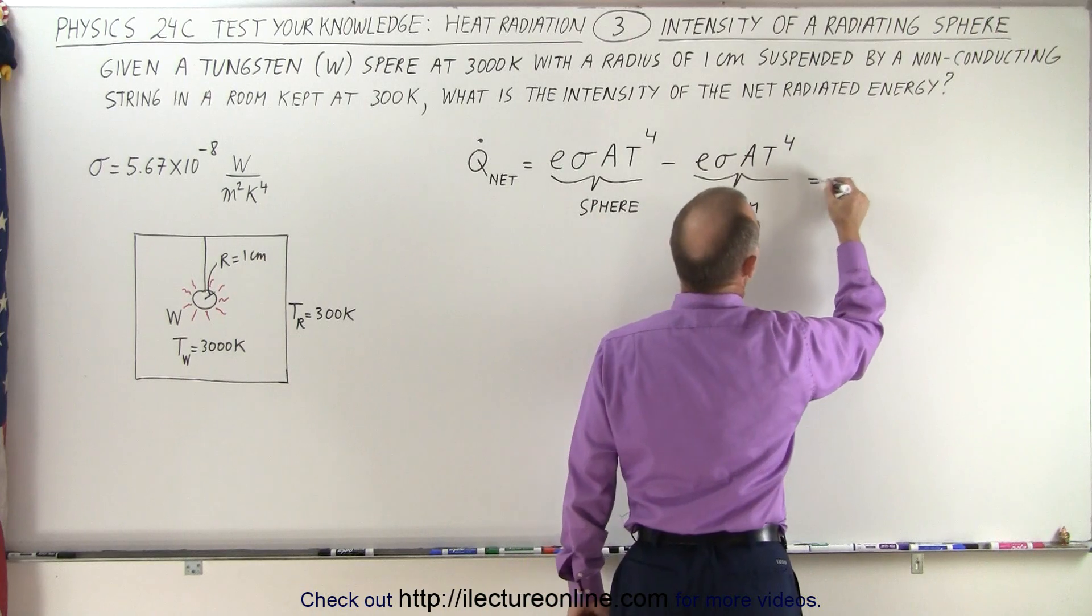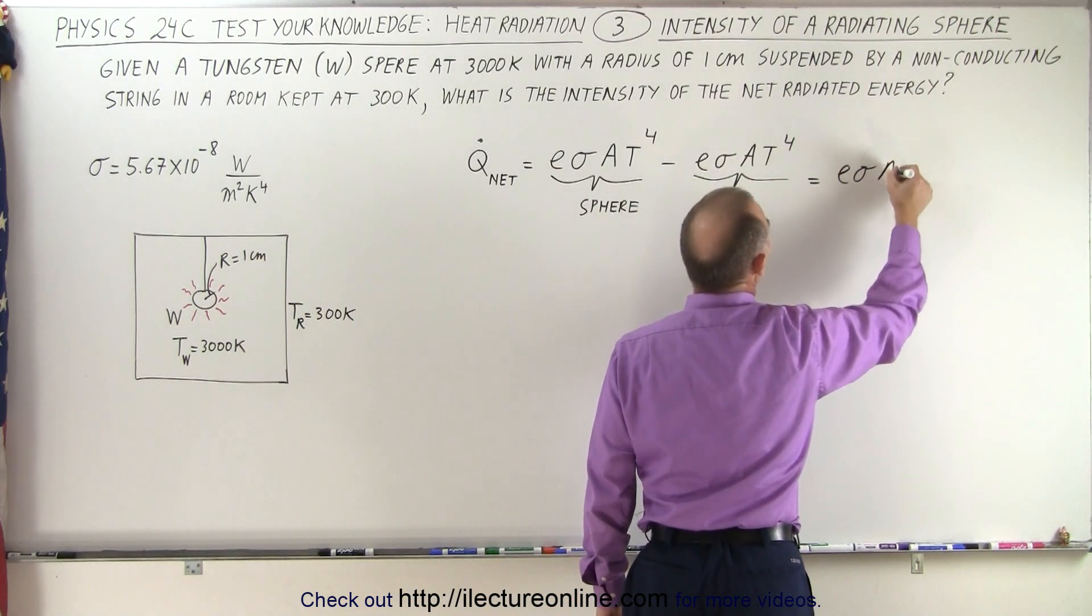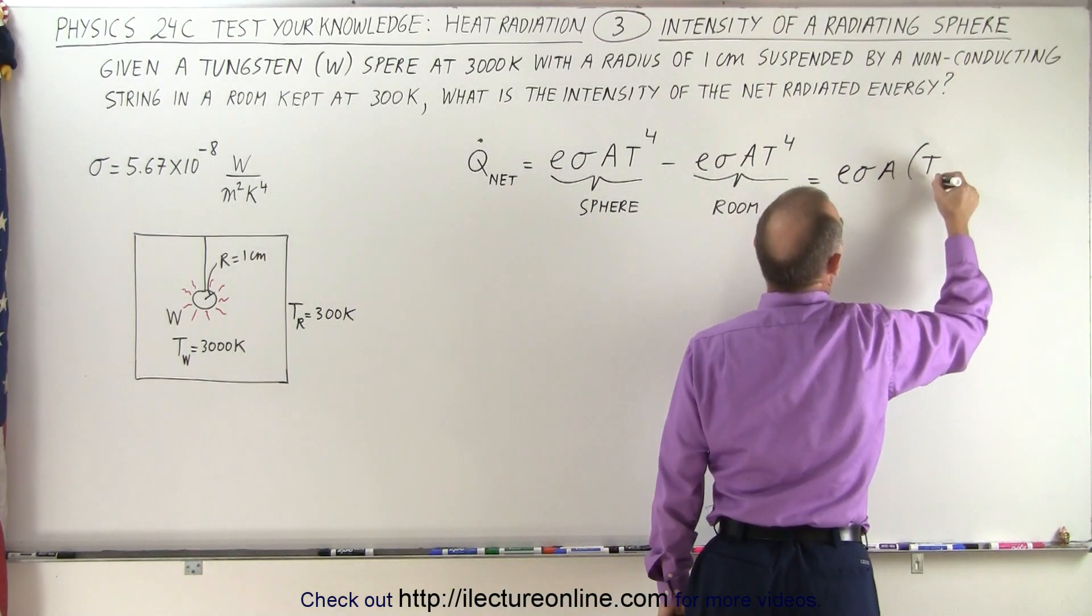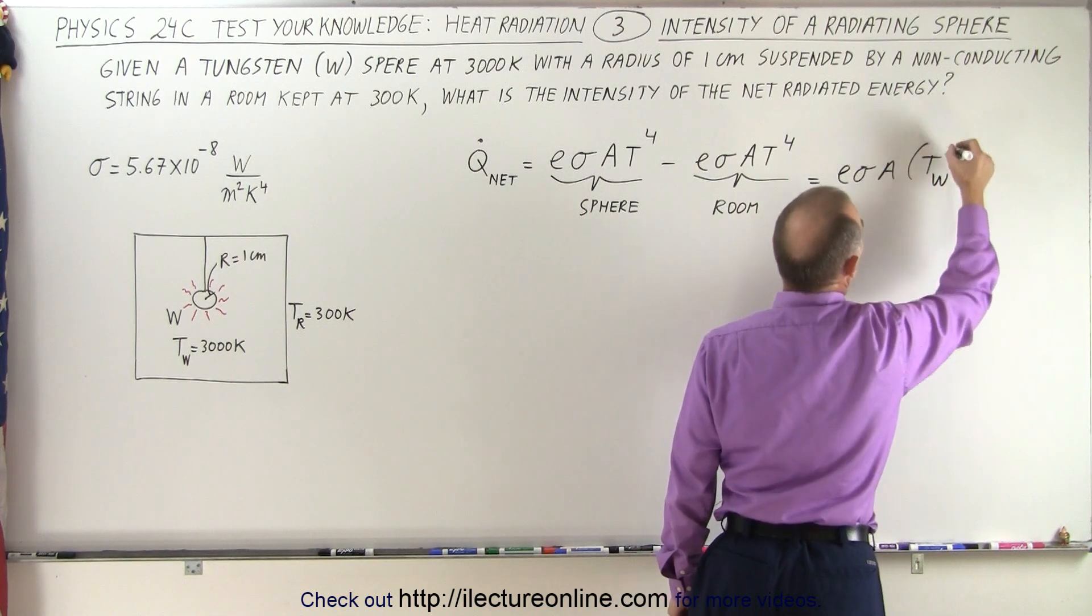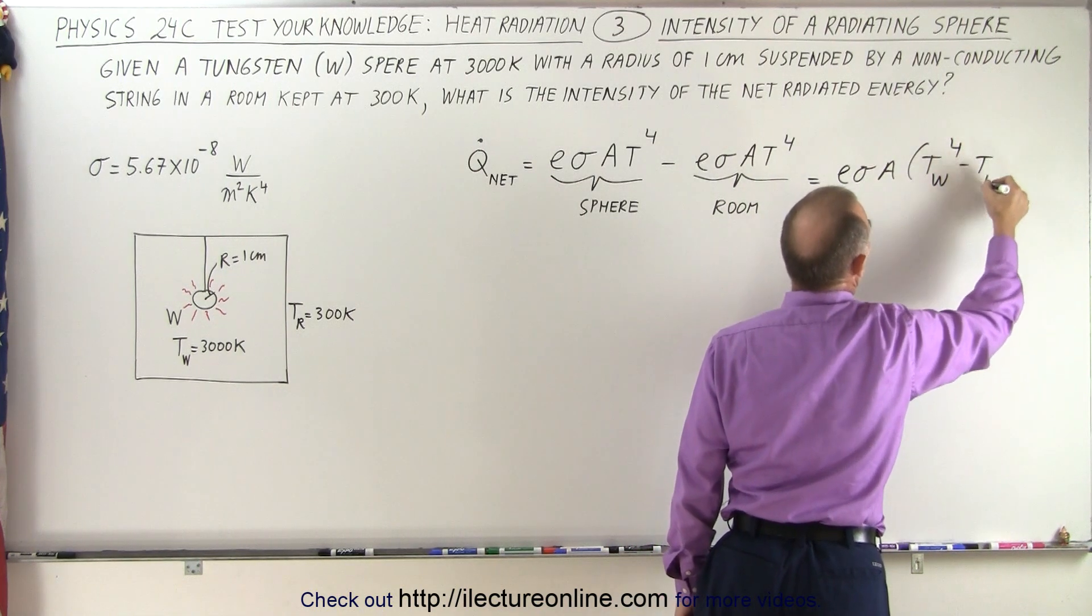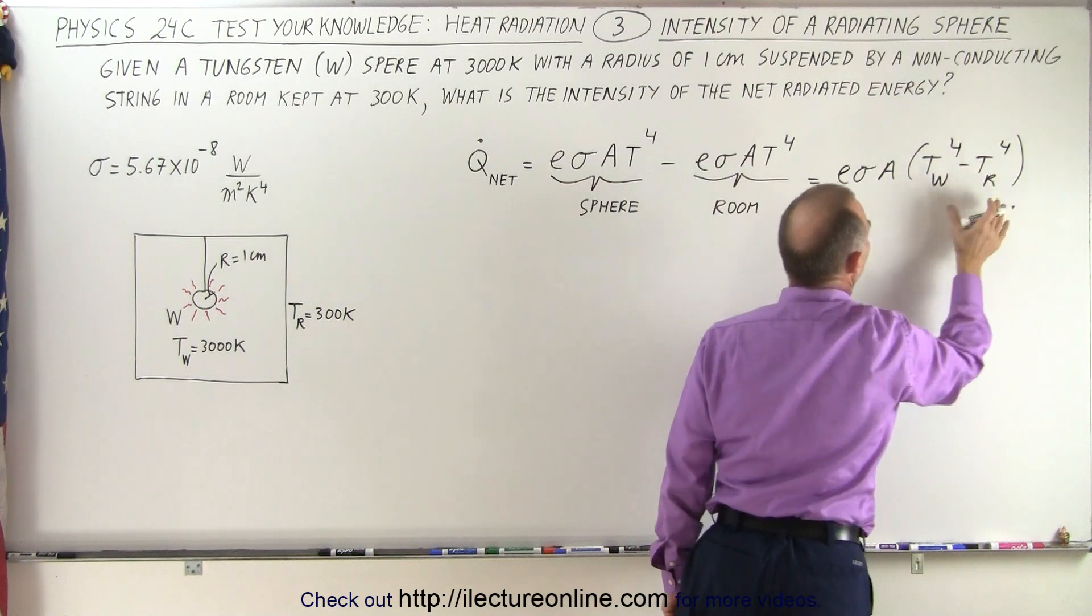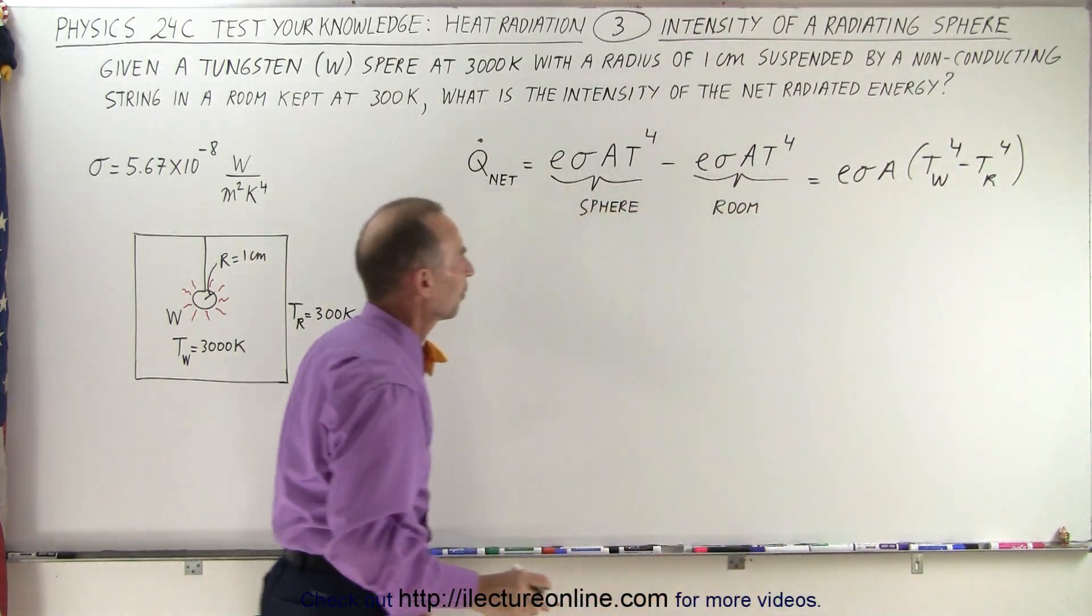So, this equation can then be written as E sigma A times the temperature of the sphere, let's call this tungsten sphere to the fourth power, minus the temperature of the room to the fourth power. So, that's where we get the difference between the two.